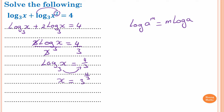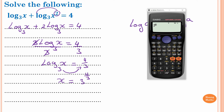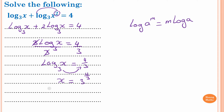So I put this in a calculator: 3 to the power of 4 over 3, or 1 and 1 third if you like. This is 4.326748 and so on. So I just round off to 2 decimal places, which is 4.33. So therefore x is equal to 4.33.